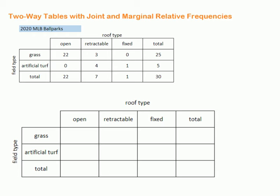Now we're going to take that data and create joint relative frequencies and marginal relative frequencies. Our process for the joint relative frequency is to take each joint frequency and divide it by the total.